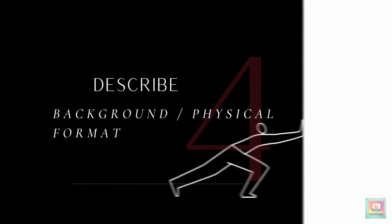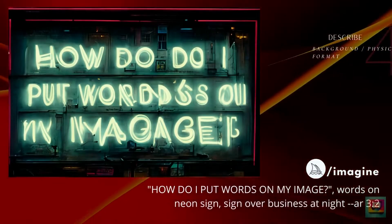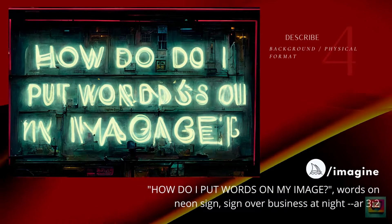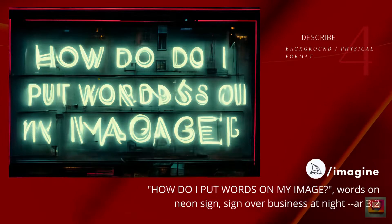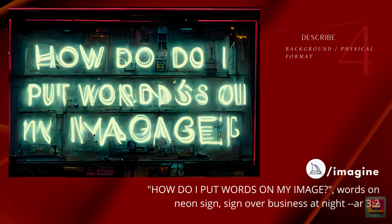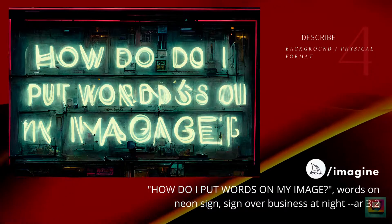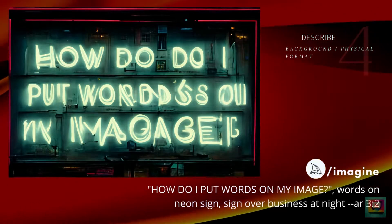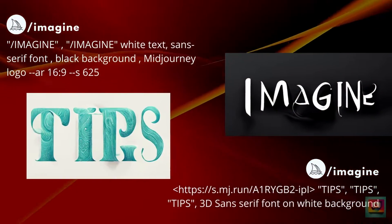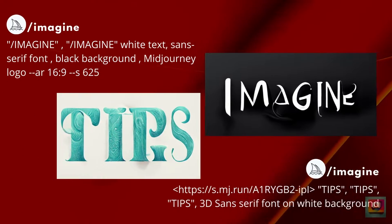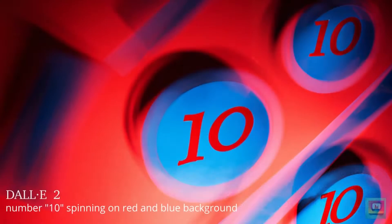Tip 4: Describe the physical format of the background where the text appears. Mediums that traditionally have words — like a book, magazine, poster, or business card — give the AI a head start, as the AI will pick up on the aesthetic of the format. But you can also specify a simpler background: a white background, a black background, or a colorful background, like I did for one of my opening slides.